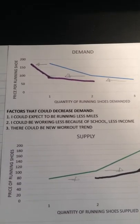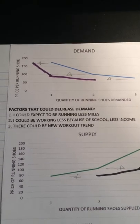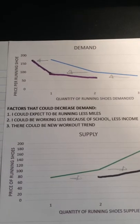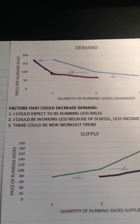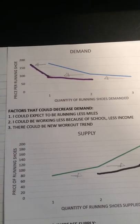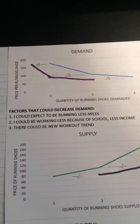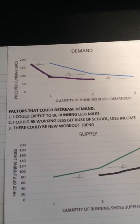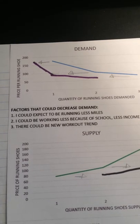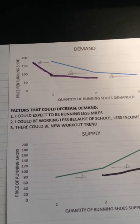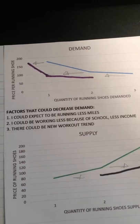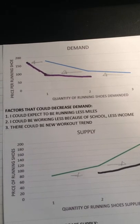Factors that could decrease demand include that I could expect to be running less miles, so less running means less of a demand for running shoes. The second factor is that I could be working less because of school, so I would have less income or less money to pay for shoes. And the third is that there could be a new workout trend such as CrossFit, which could cause me to start running less and decrease my demand for running shoes.